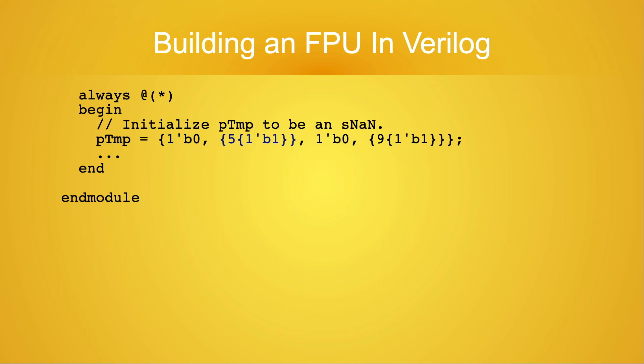Skipping past the comma, the next expression is left brace 5, left brace 1'b1, right brace, right brace. In the heart of the expression is the sub-expression 1'b1. You've probably already guessed that this specifies a 1-bit value, which is initialized to 1. The curly braces and the number 5 represent a replication operation.